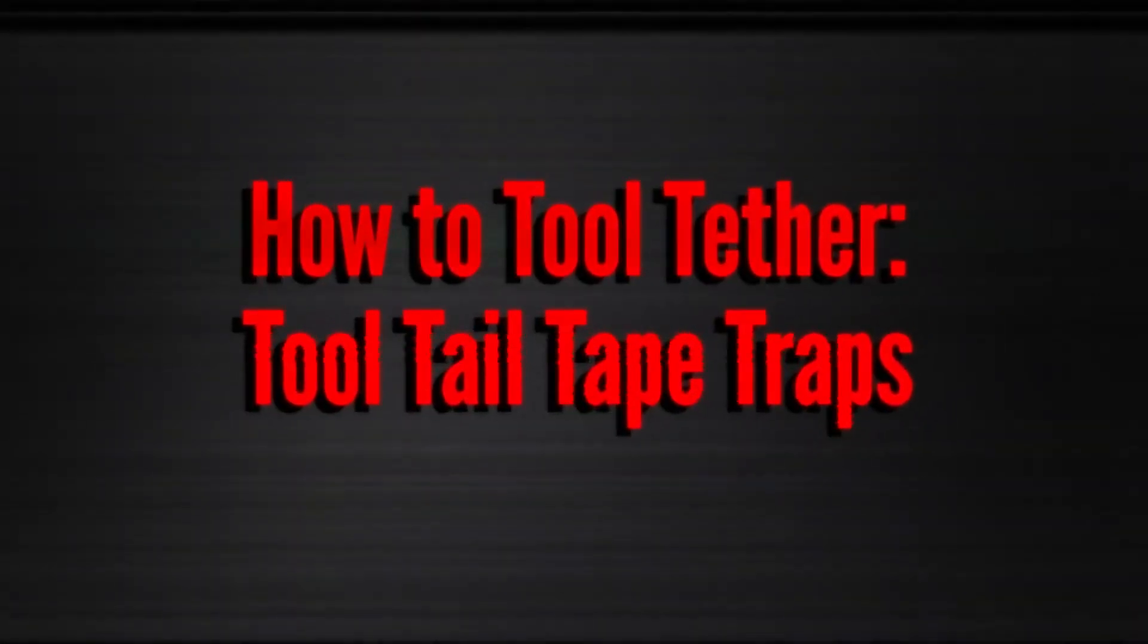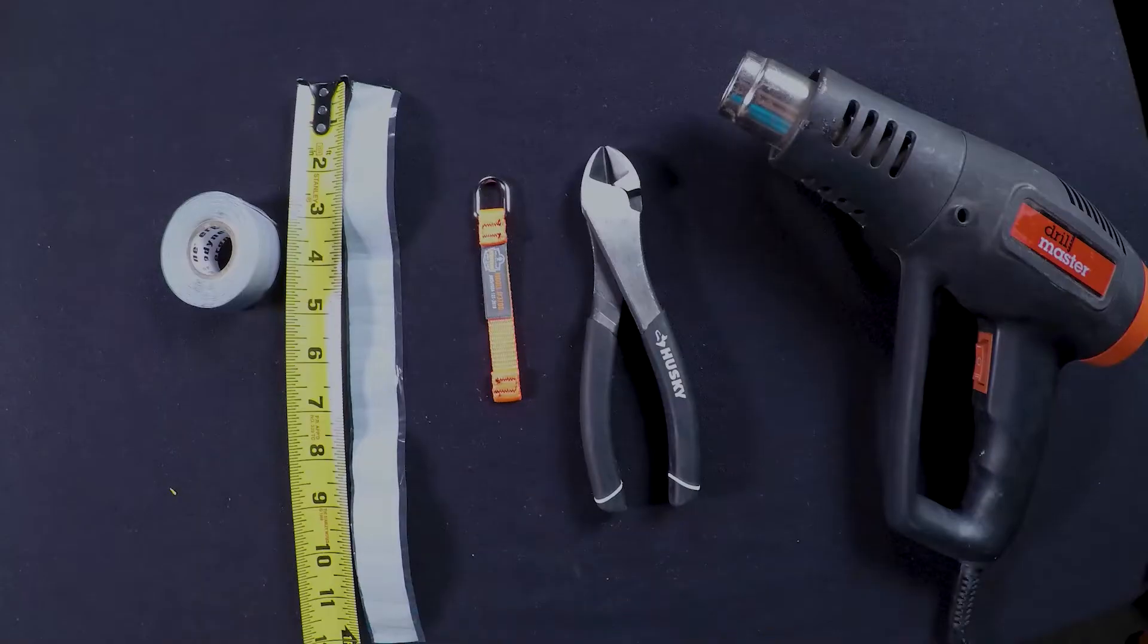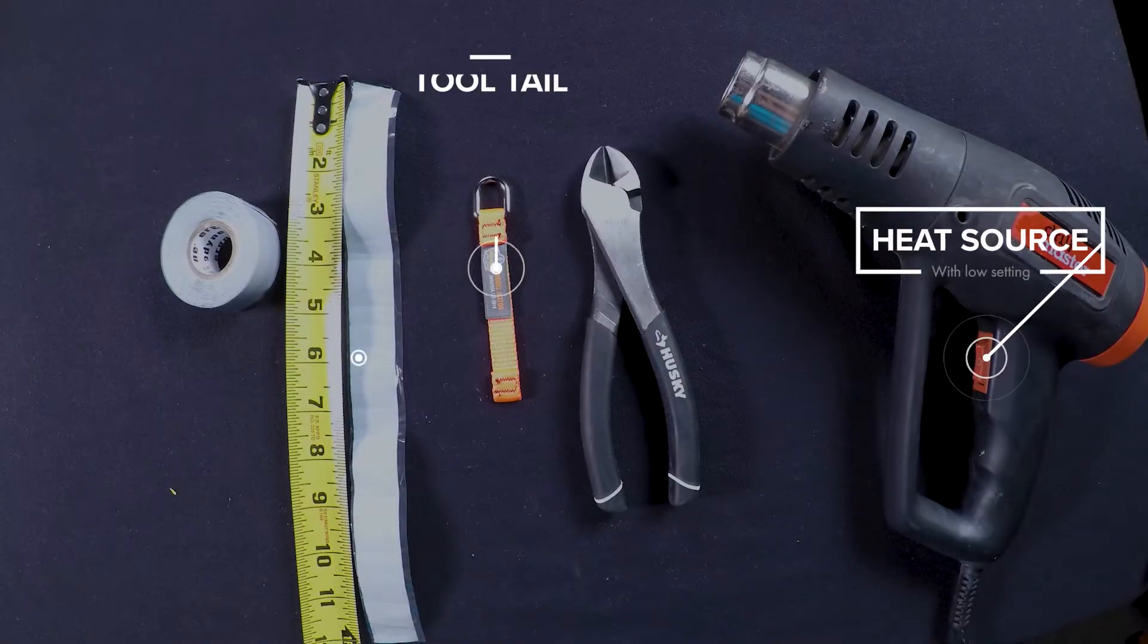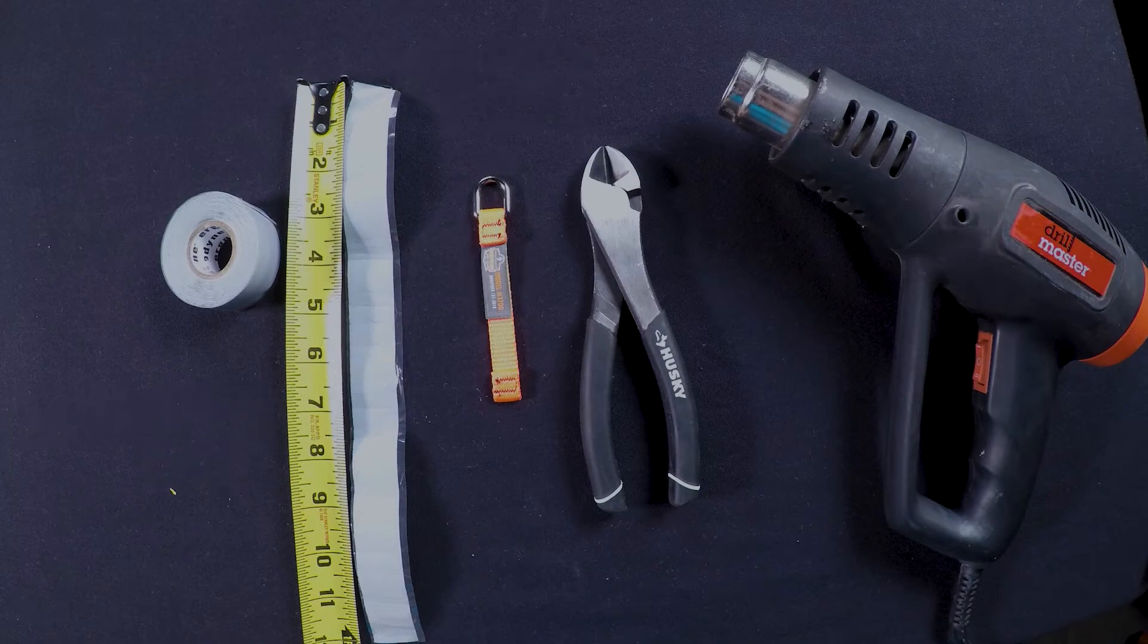The next method of tool tethering is tape traps. For tape trap tool tethering you will need a heat source with a low setting, a tool tail, and the appropriate length of tape trap.